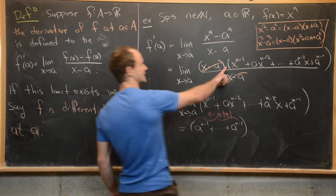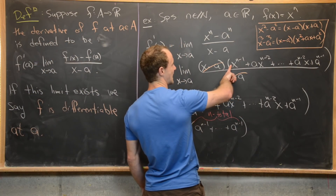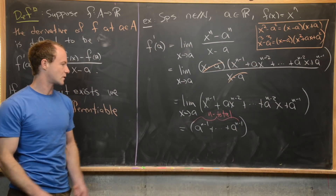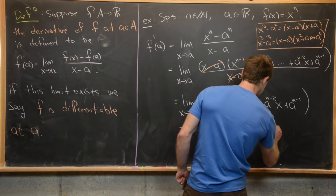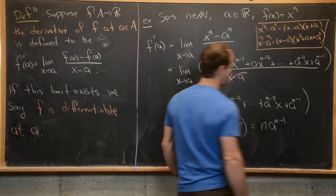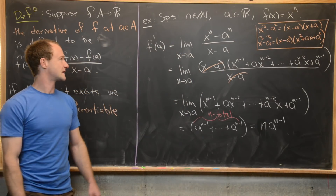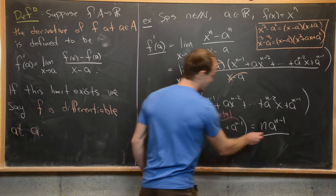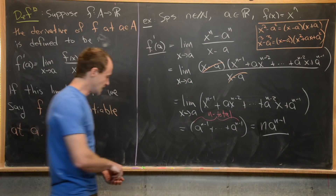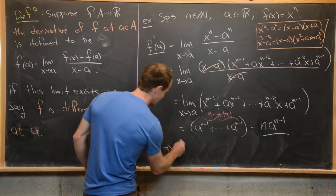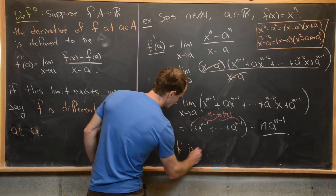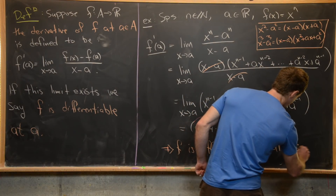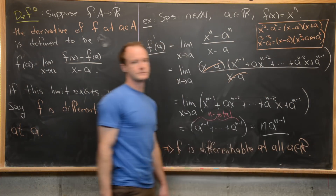We have n terms in total — you can see that by counting: we have a to the zero, a to the one, all the way up to a to the n−1, so that's n total terms. So each term becomes a to the n−1, and summing n copies gives us n times a to the n−1, which is what was expected. In conclusion, we found the derivative of f at every real number, so f is differentiable at all points a in ℝ.